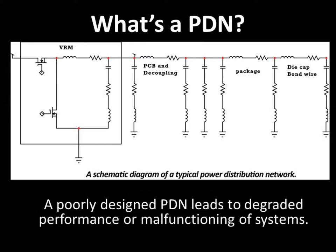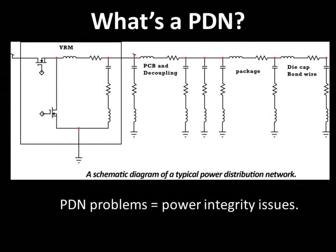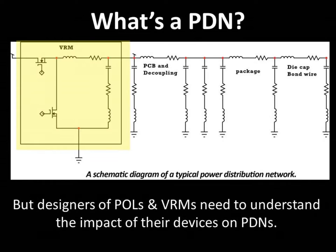A poorly designed PDN leads to many system design problems, ranging from circuits that operate with degraded performance to circuits that don't function at all. Examples of degraded performance include circuits where the PDN spreads noise throughout the system, possibly through PC board crosstalk or inadequate regulator PSRR. All of these problems are classified as power integrity issues. Although an engineer who designs a POL or VRM may never have to perform a power integrity analysis on a PDN — which can involve costly 3D simulations — he or she needs to be aware of the impact that their power converter design will have on the customer's PDN.